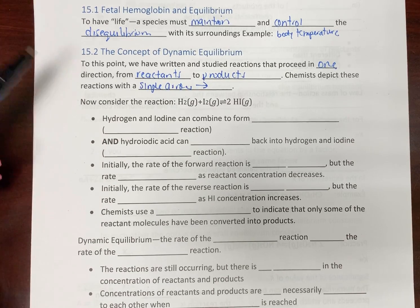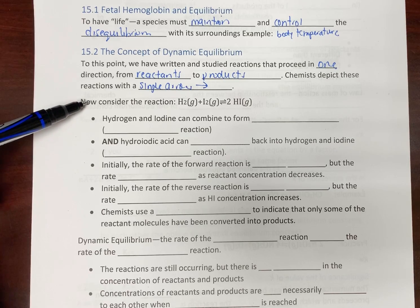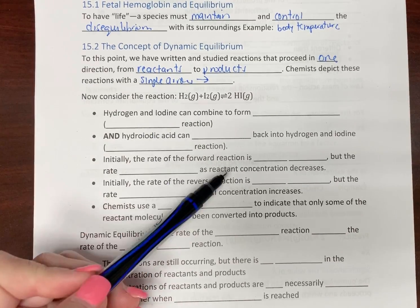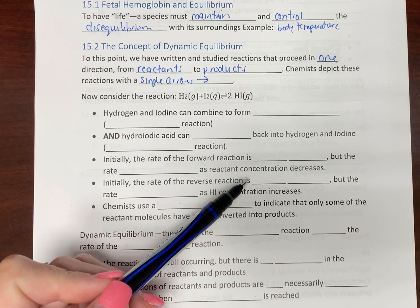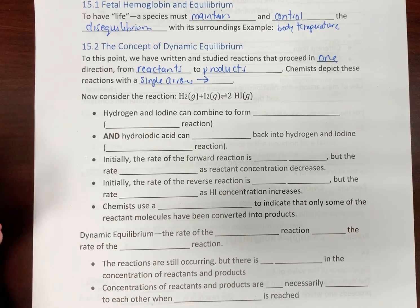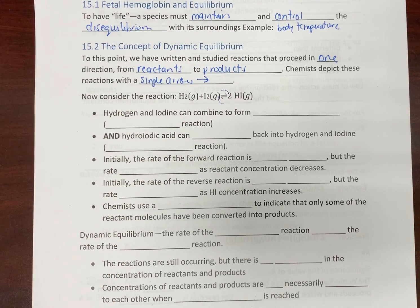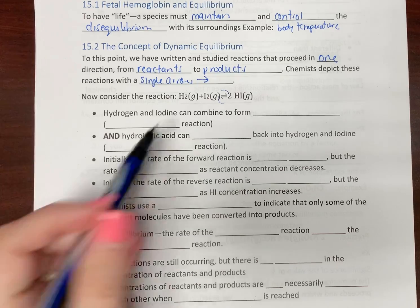Now we're going to have a different reaction. We have hydrogen gas, iodine gas making hydroiodic acid gas. Now do you see here you have a double arrow there? That's an equilibrium thing.